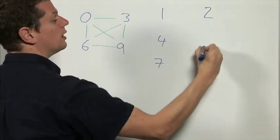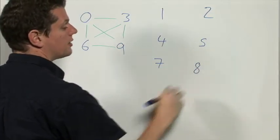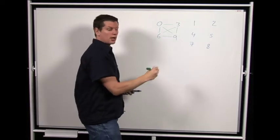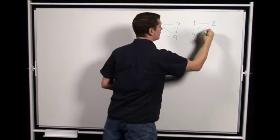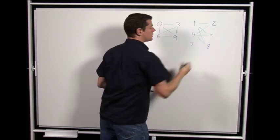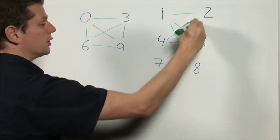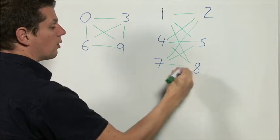So 1 has to go with 2 or 5 or 8, and 4 has to go with 2 or 5 or 8, and 7 has to go with 2 or 5 or 8.